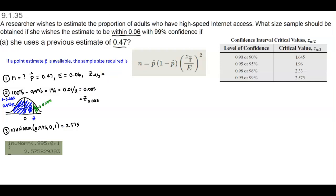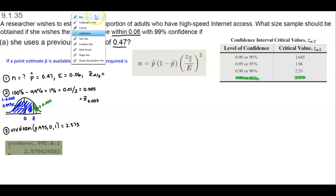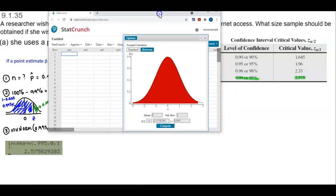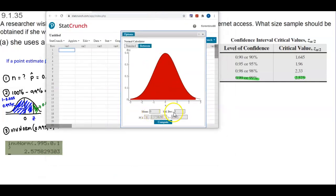Looking at our chart, for 99% confidence, the critical value is 2.575. We can also confirm this using StatCrunch — with a mean of 0, standard deviation of 1, and area of 0.995, selecting compute gives us 2.575. So we use 2.575 as our critical value.